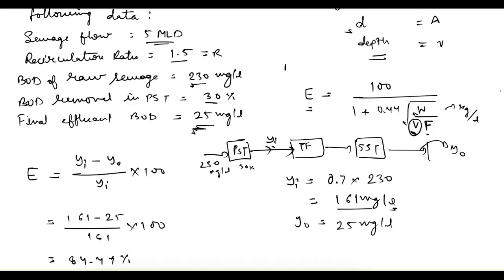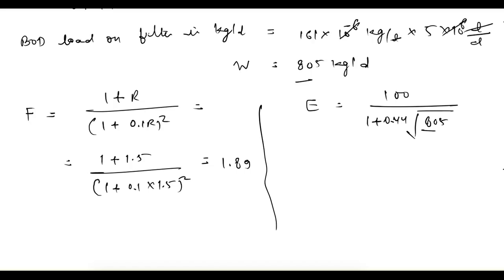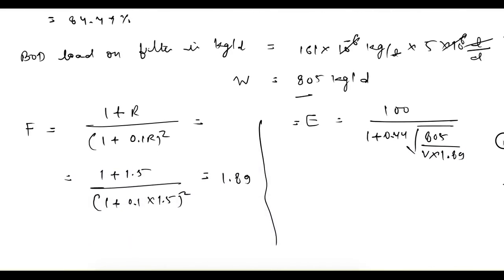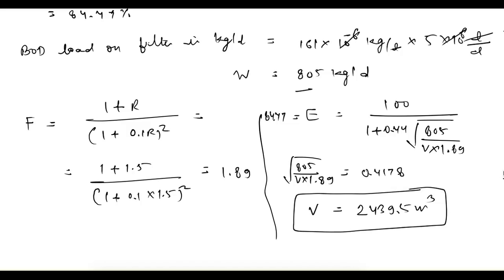Using the NRC formula: 84.47 = 100 / [1 + 0.44 × √(805 / (V × 1.89))]. Solving this, √(805 / (V × 1.89)) = 0.4178, and from here we can calculate V = 2439.5 cubic meters. This is the required volume of the filter.